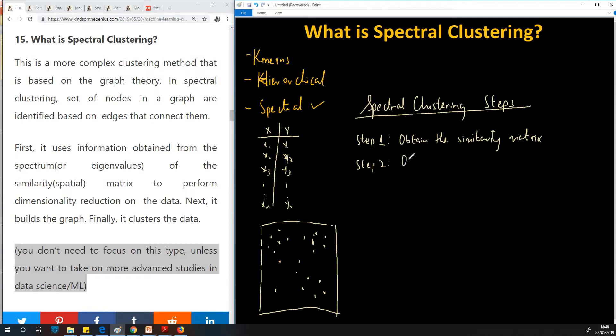So now step two, obtain or compute, obtain the eigenvalues of, let's call this a, as, this is similarity matrix as. And a is the original data sets, the original data sets.